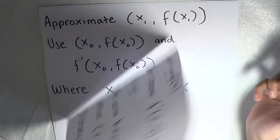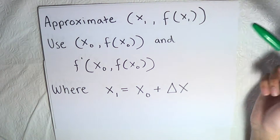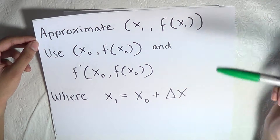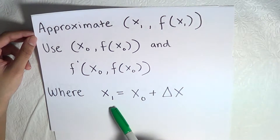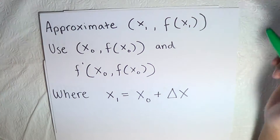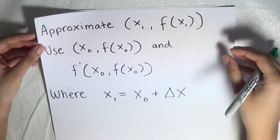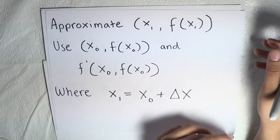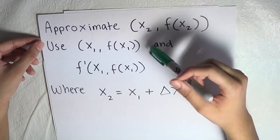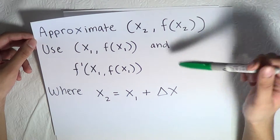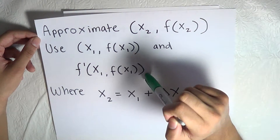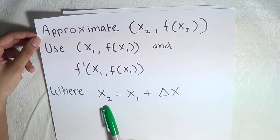In Euler's Method we are basically approximating values. We use all that information to approximate x sub 1 and f of x sub 1. To approximate these values you use the starting point and the slope of the starting point, where x sub 1 equals x sub 0 plus delta x. In Euler's Method we can also approximate values further and further — that's why we repeatedly use tangent lines. To approximate x sub 2 and f of x sub 2, we use the previous point and the slope of that previous point.